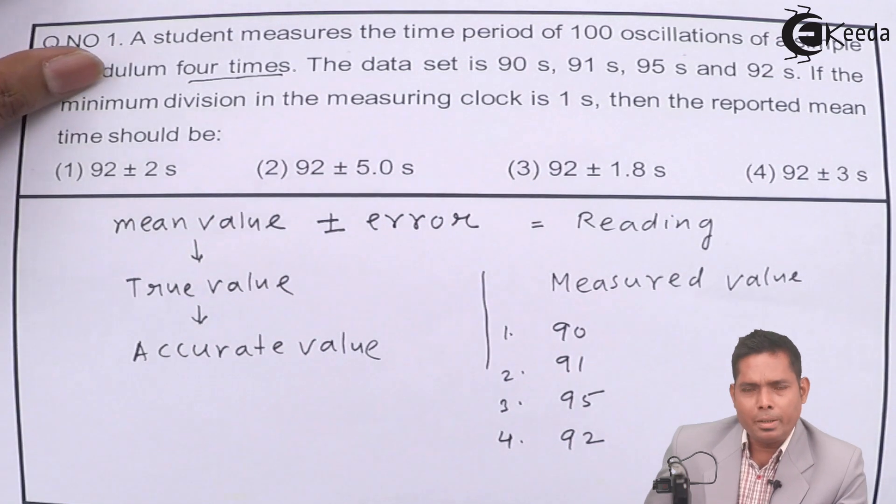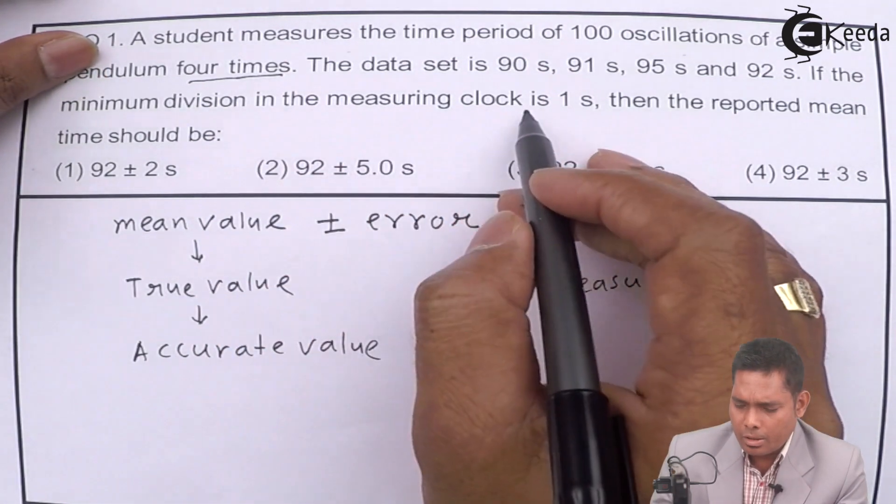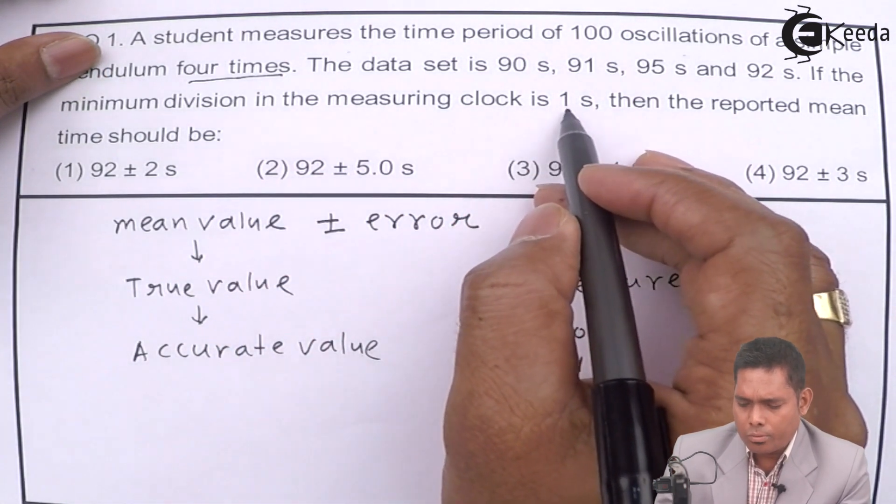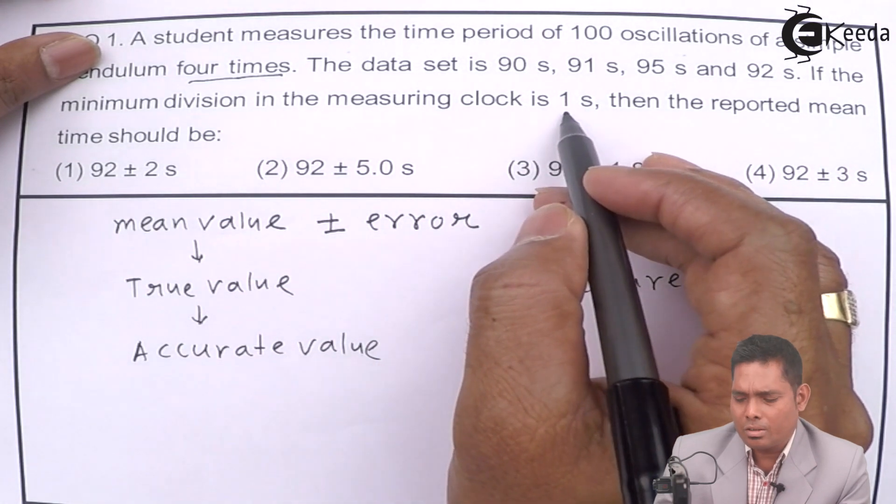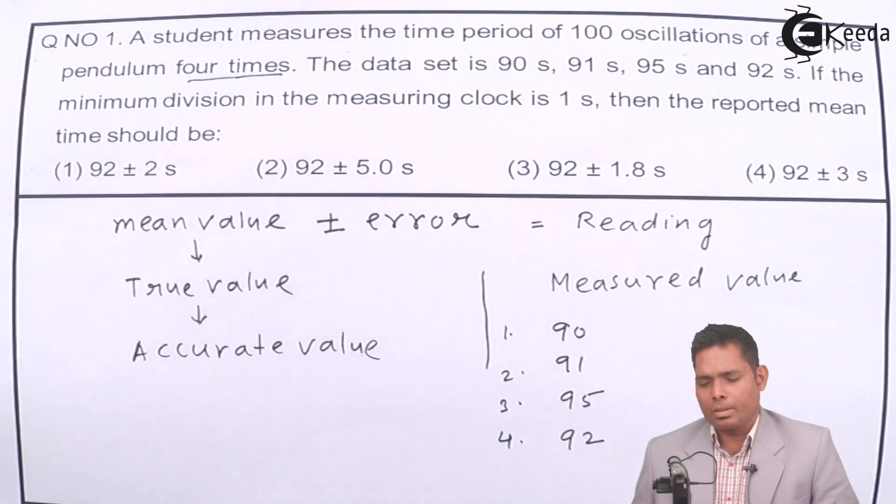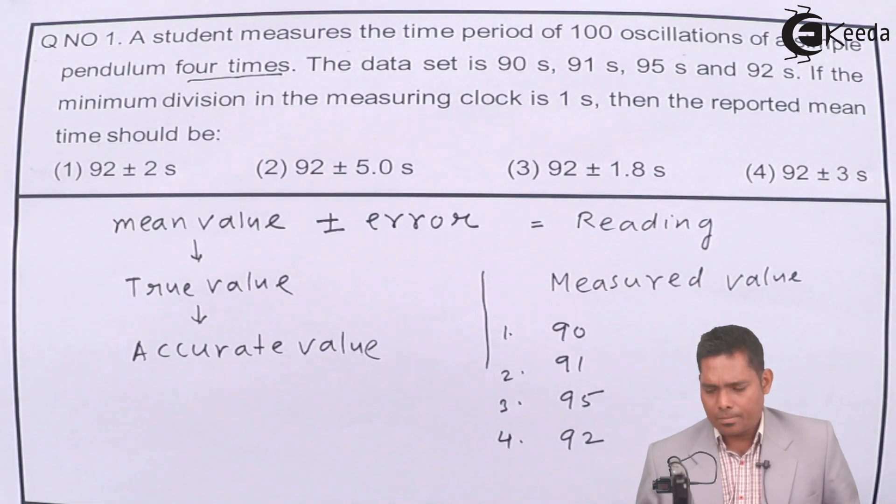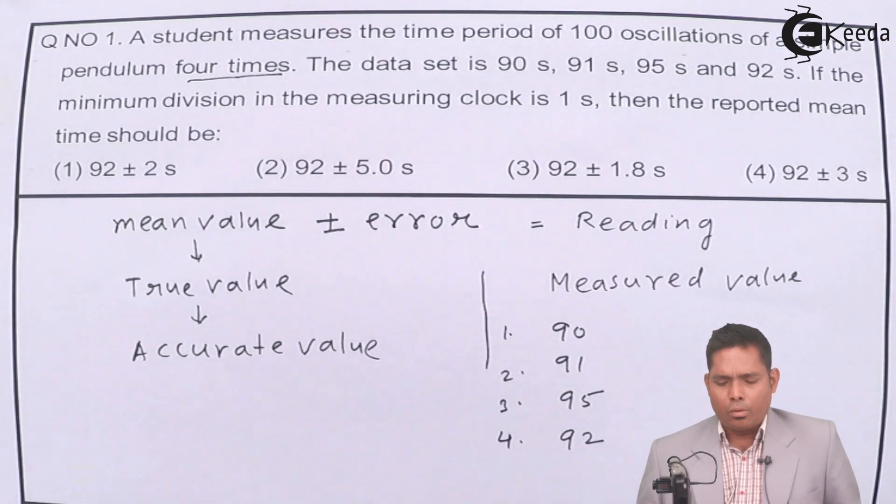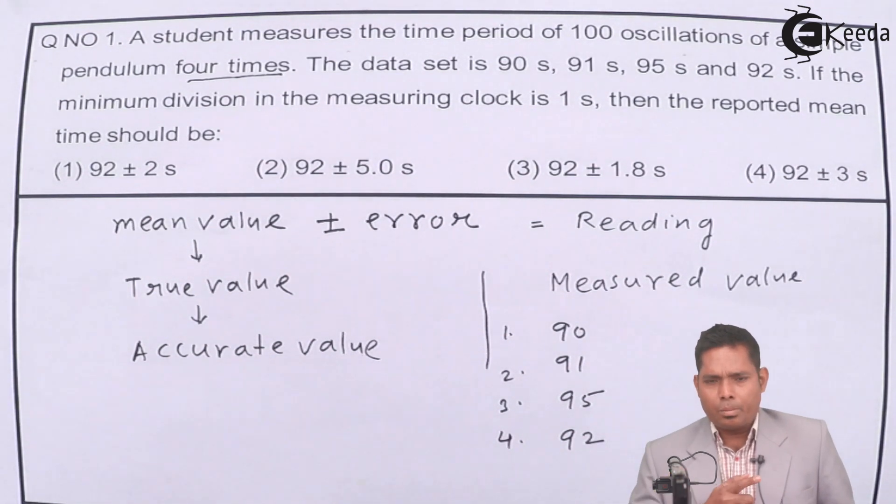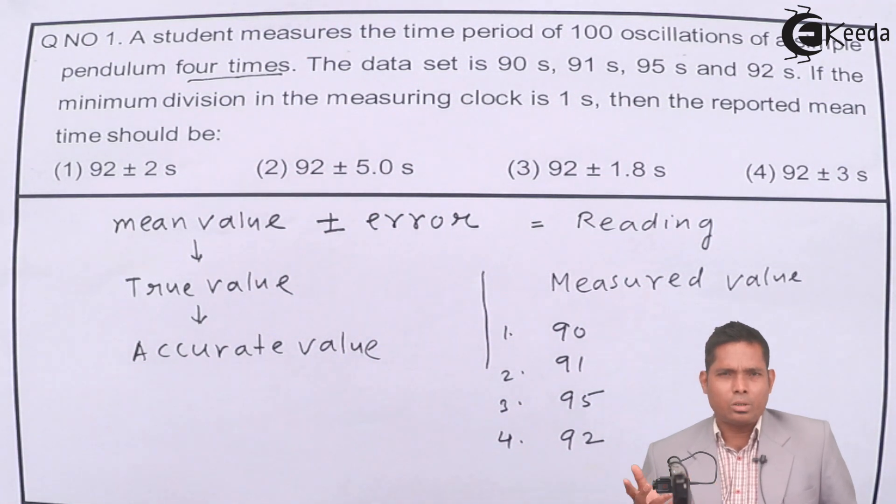Now, the instrument in which it is measuring is a clock which can measure not less than 1 second, so minimum you can measure is 1 second, just like your normal watch. Therefore, when the oscillation is taking place, when it completes suppose 100 oscillations, if it completes 1 oscillation then stop it. So when you stop it, it doesn't necessarily measure the actual time of oscillation.